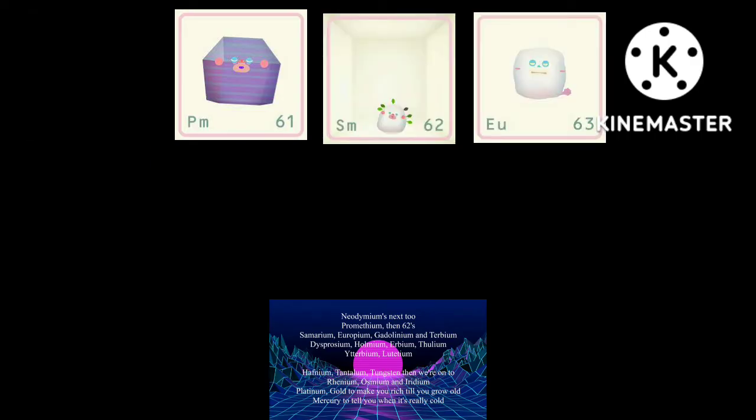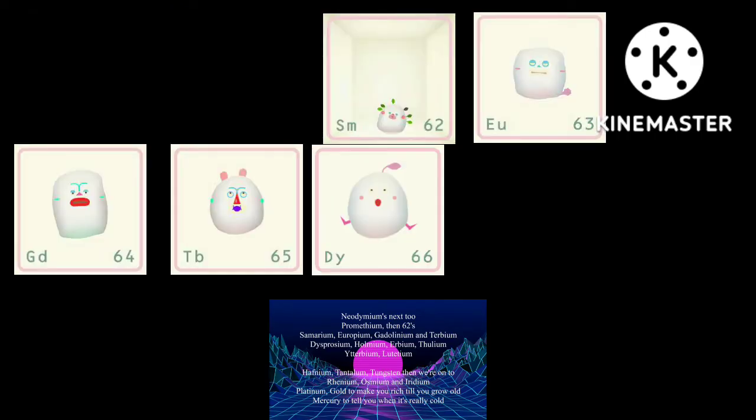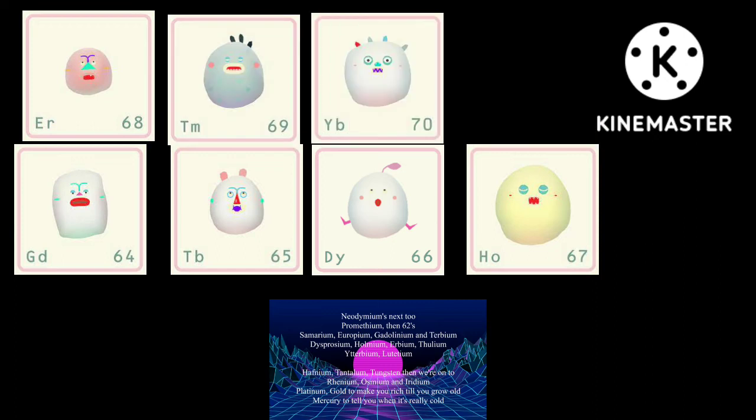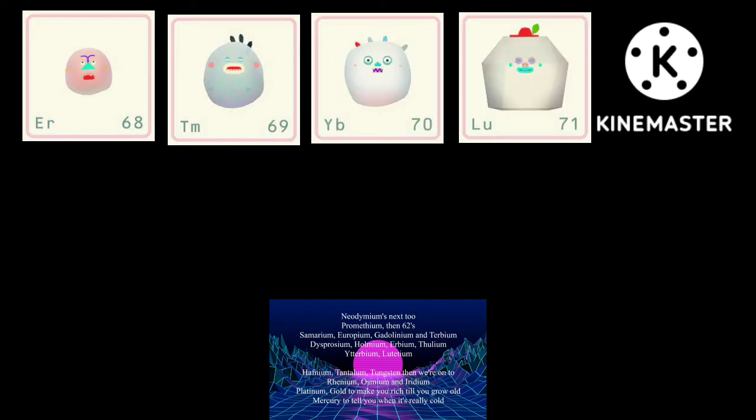Neodymium's next to promethium, then 62, samarium, europium, gadolinium, terbium, dysprosium, holmium, erbium, thulium, ytterbium, lutetium.